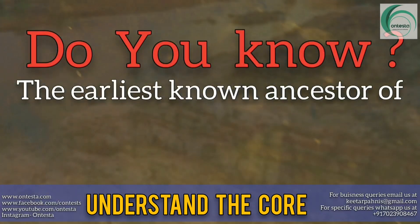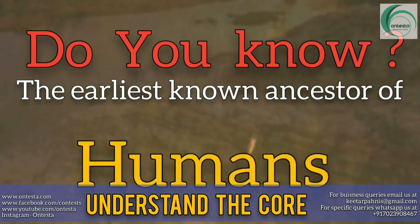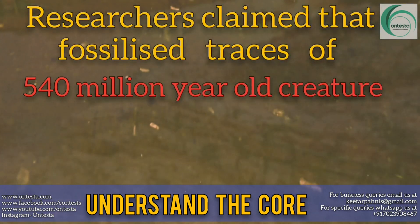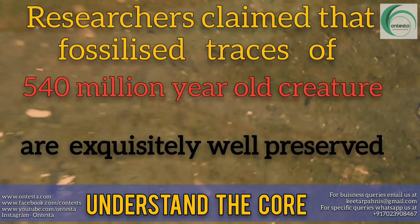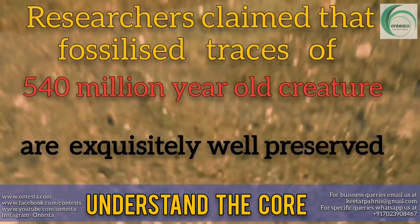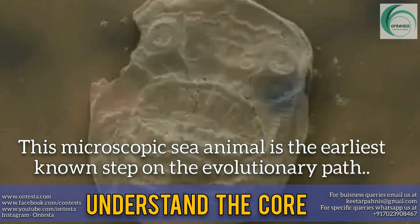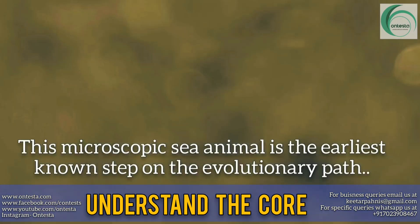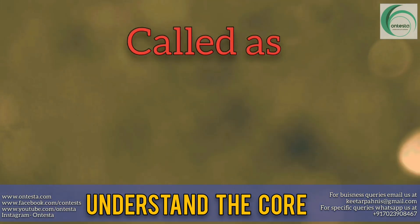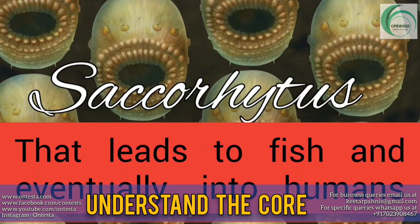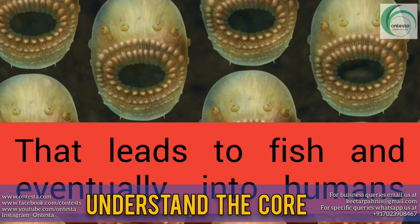Do you know the earliest known ancestor of human? Researchers claim that fossilized traces of 540 million year old creatures are exquisitely well preserved. This microscopic sea animal is the earliest known step on the evolutionary path, called Saccorhytus, that leads to fish and eventually to humans.